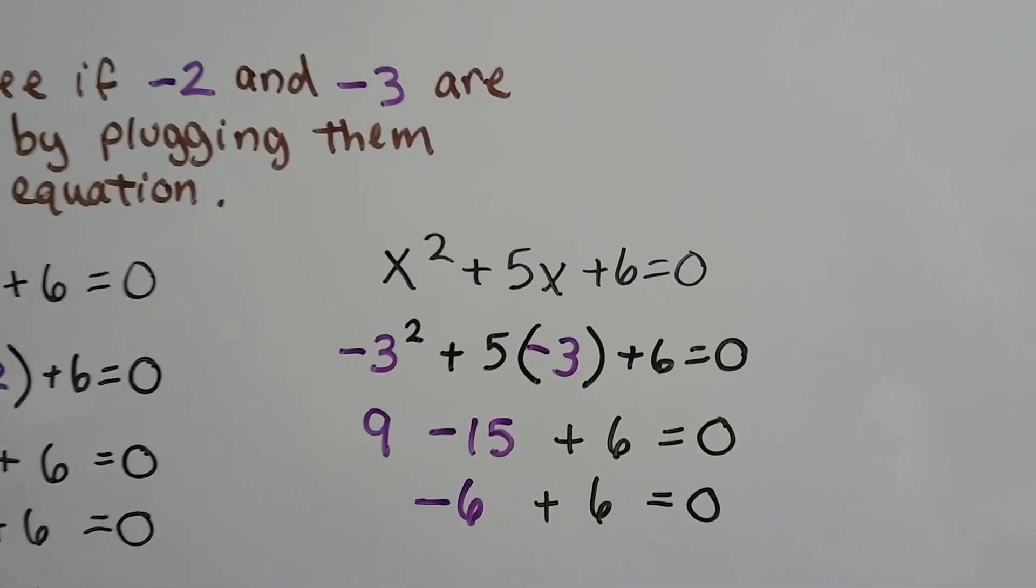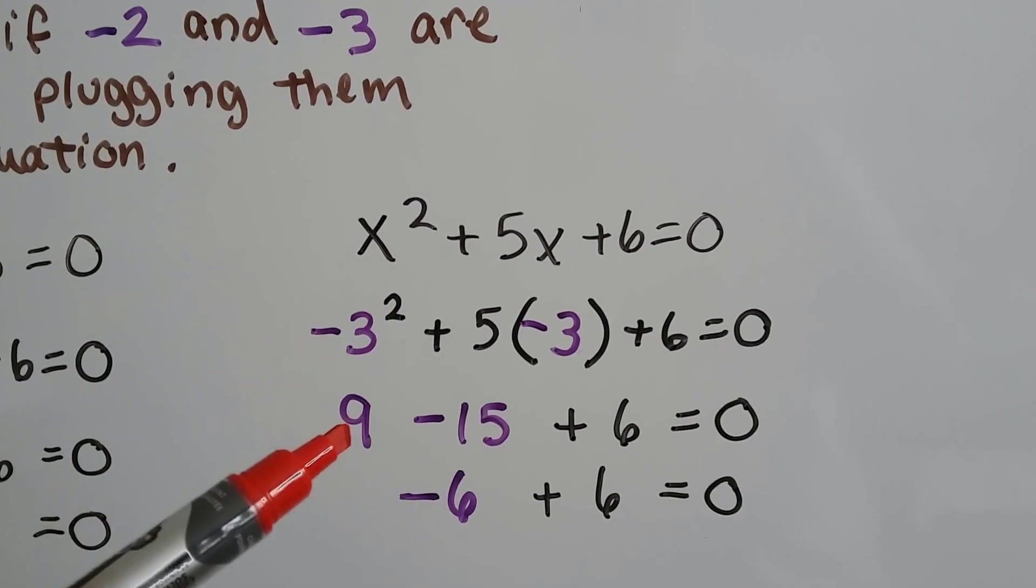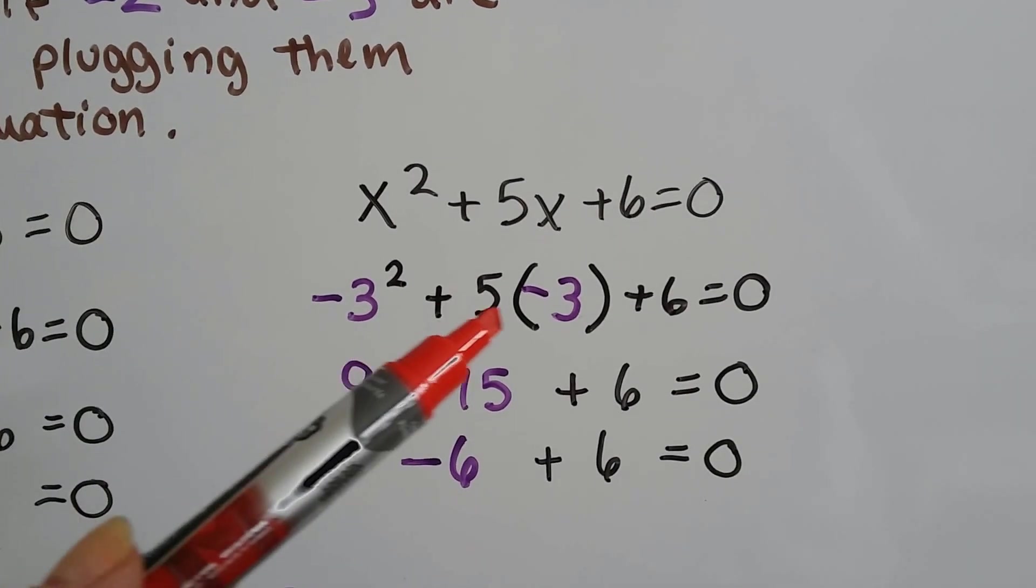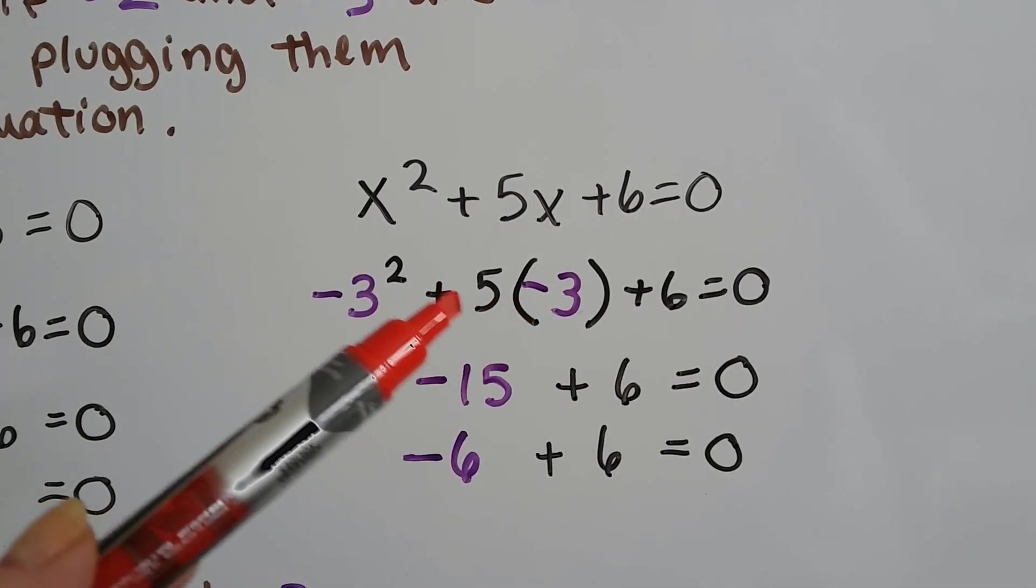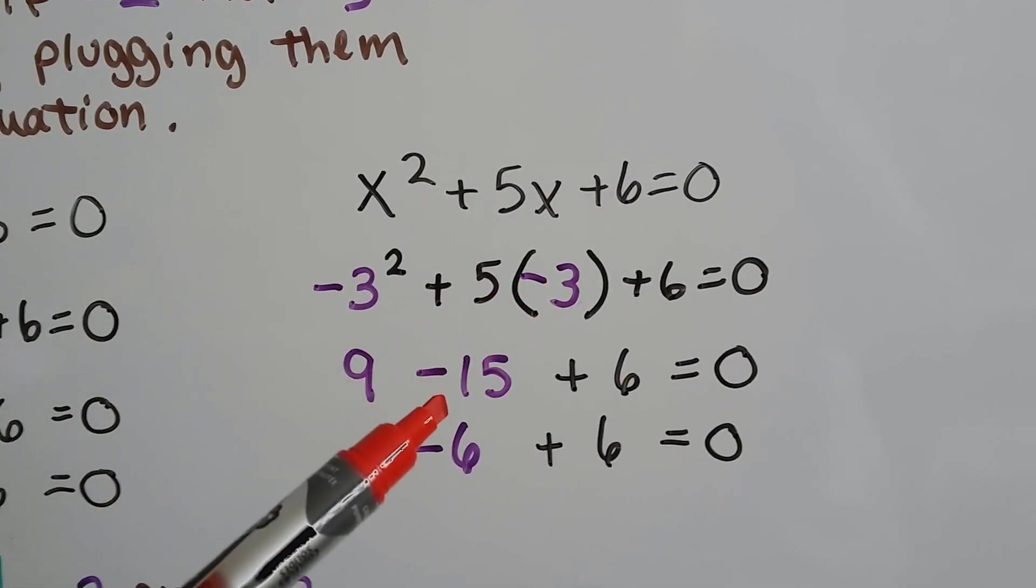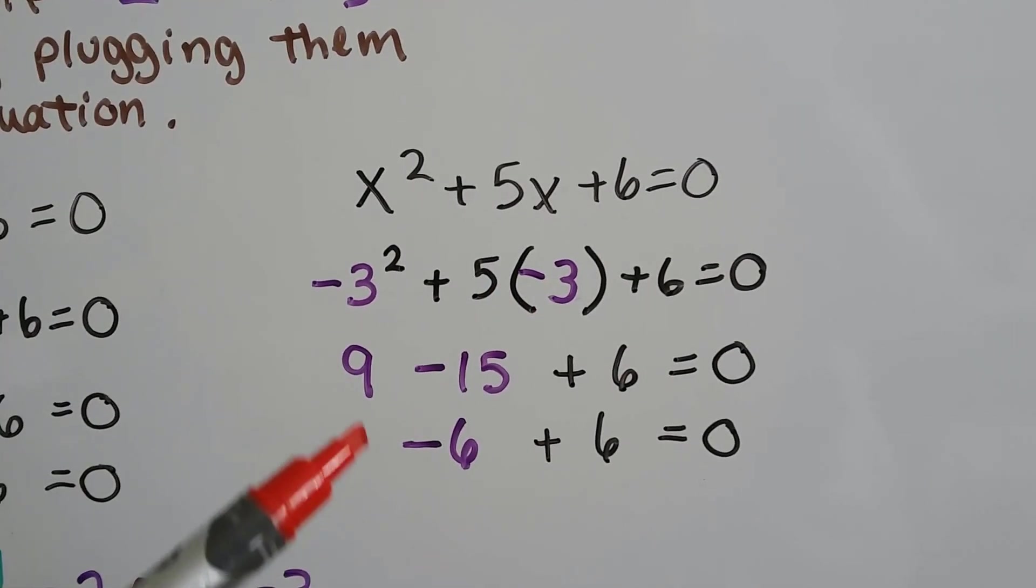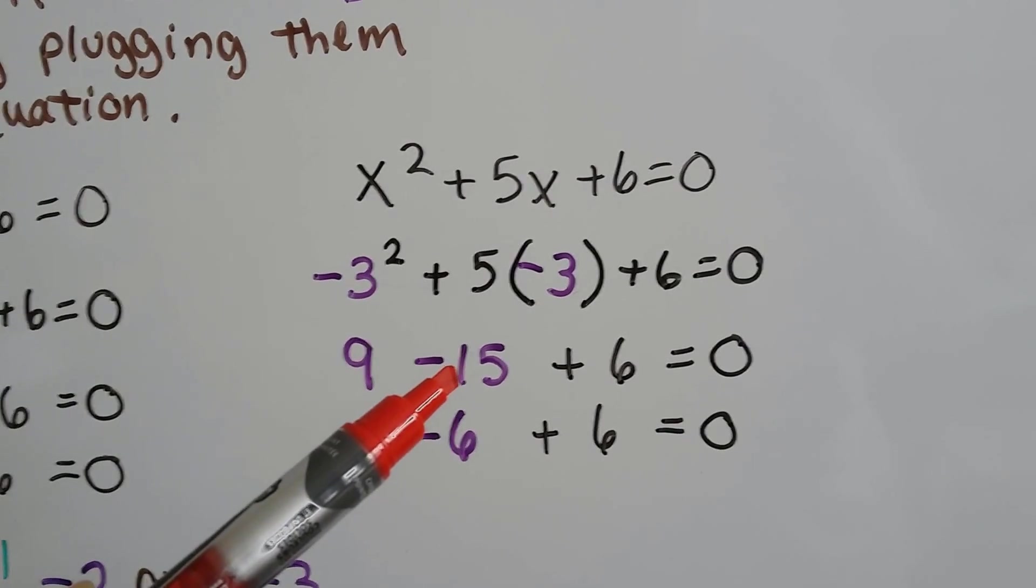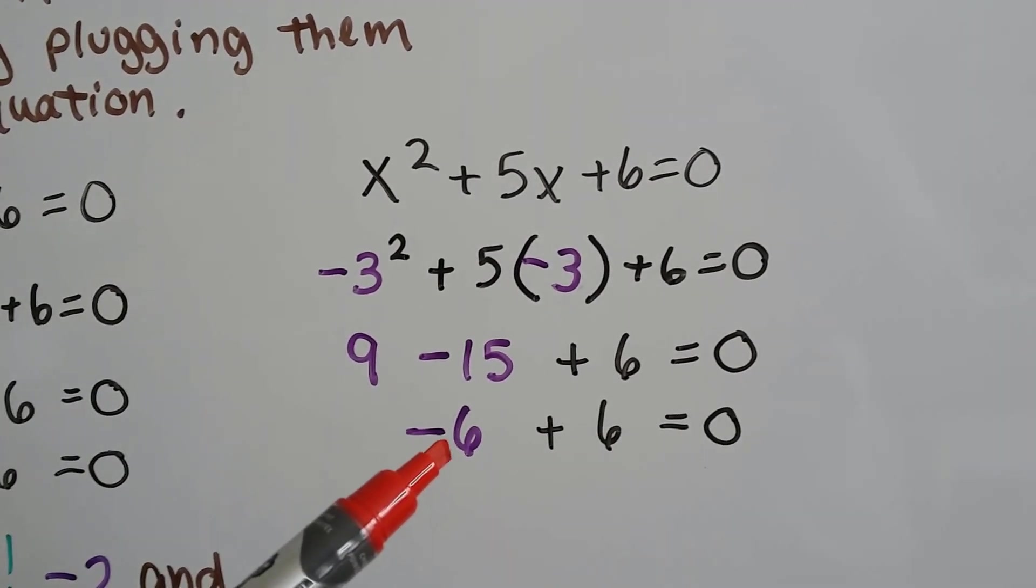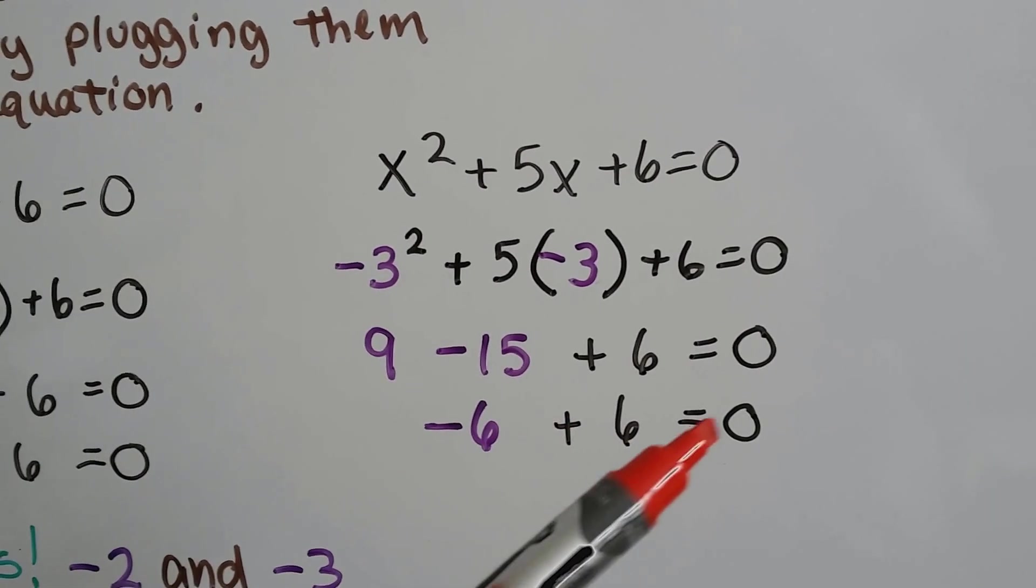How about negative 3? Negative 3 times negative 3 is a positive 9, and we have to take away 15, because a plus 5 multiplied to a negative 3 makes a minus 15. Well, positive 9 take away 15 is going to give us a negative 6, and if we add 6, that makes a zero pair.